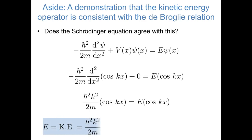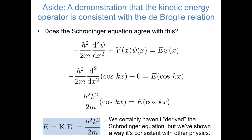Because our potential energy operator was zero in this case, we know that all of that energy is kinetic energy. So the Schrödinger equation tells us that the kinetic energy of this wave function is h bar squared k squared over 2m, the same as it was from the de Broglie relation on the previous slide.